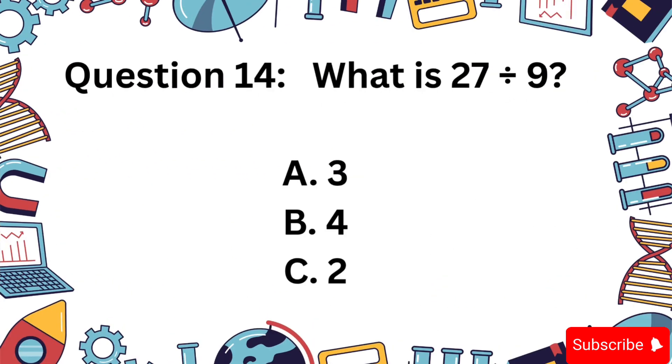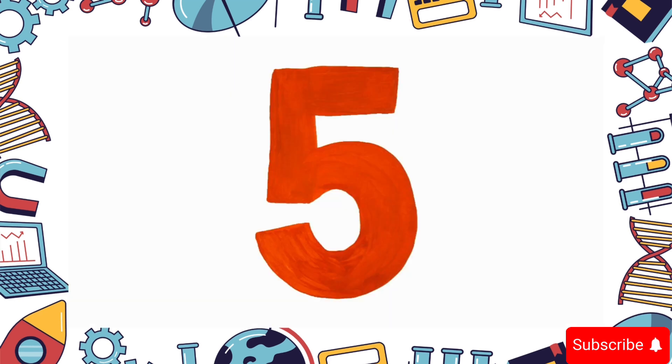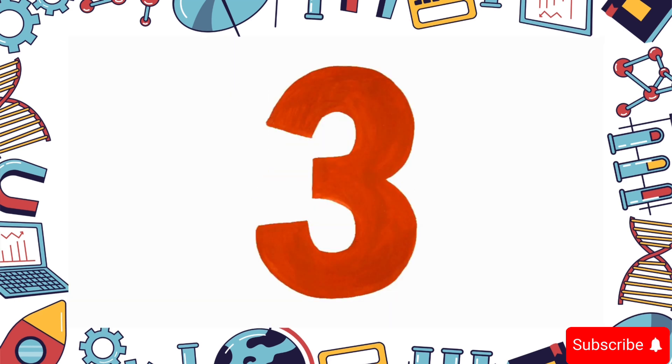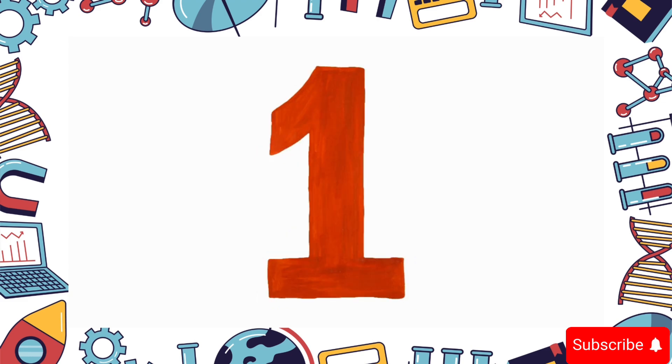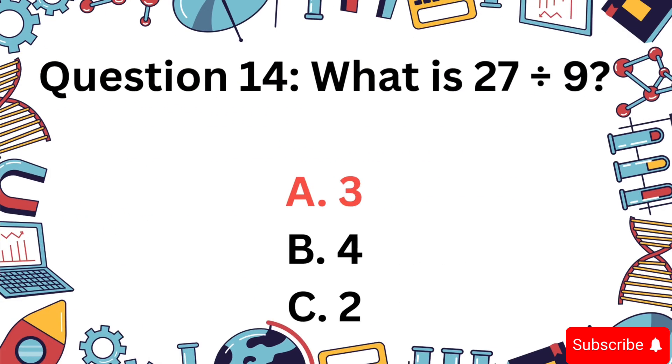27 divided by 9. Is it A, 3, B, 4, or C, 2? The answer is A, 3.